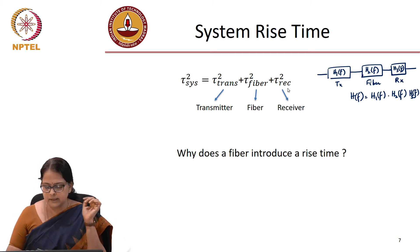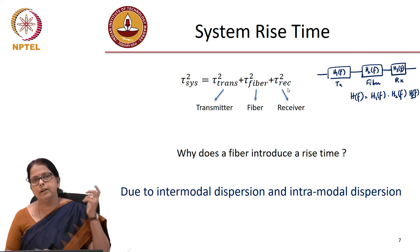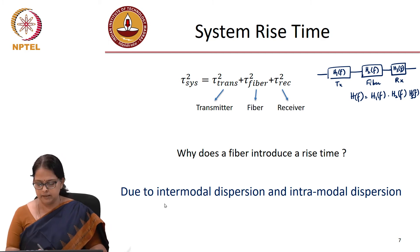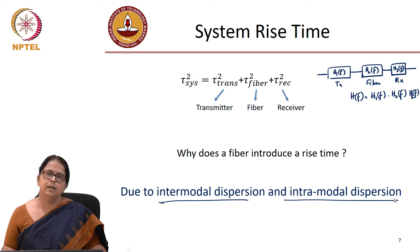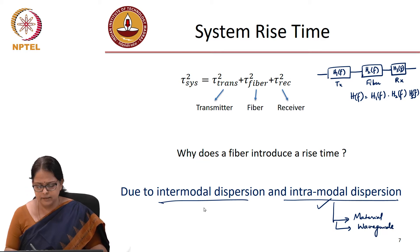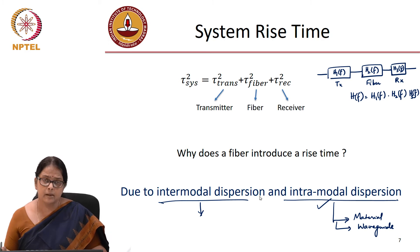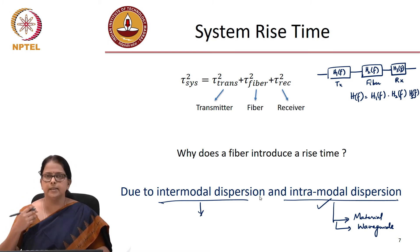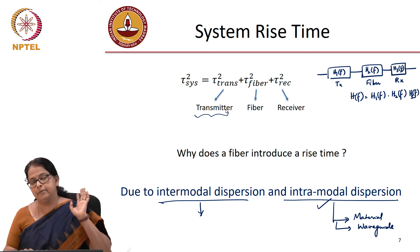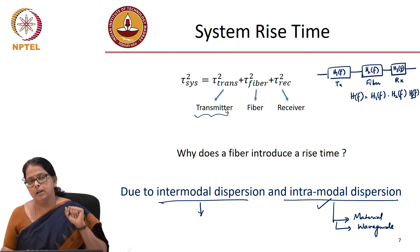Fiber introduces rise time because of dispersion, and depending on the type of fiber, it could be intermodal dispersion or intramodal dispersion. In the case of a single-mode fiber, we only consider intramodal dispersion, which is due to material dispersion and waveguide dispersion. Intermodal dispersion is the walk-off between the different modes of a multimode fiber. The rise time of the transmitter is decided by the source type — we covered this when we learnt about lasers, LEDs, and receivers.